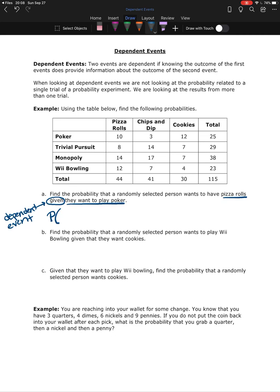So the way we write this is I'm going to say the probability of pizza rolls given, this line here stands for given, they want to play poker. Given they want to play poker basically says I only care about the people that want to play poker. So the total number of people that want to play poker becomes my overall group of interest. That's going to become the denominator of my fraction.